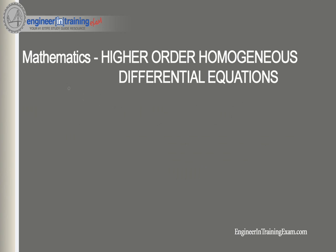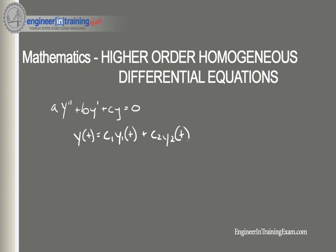A homogeneous linear second-order differential equation takes the form a·y'' plus b·y' plus c·y is equal to zero. When we are dealing with these types of equations we want to solve for the general solution given by y(t) equals c1·y1(t) plus c2·y2(t).